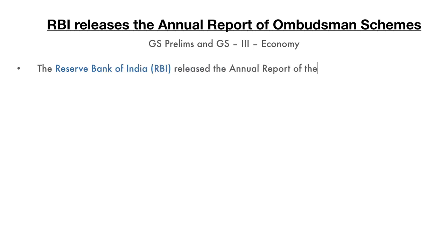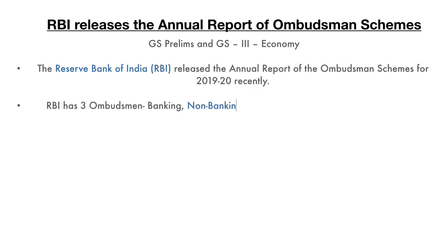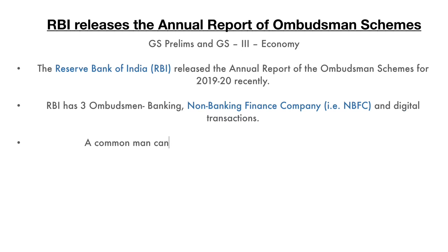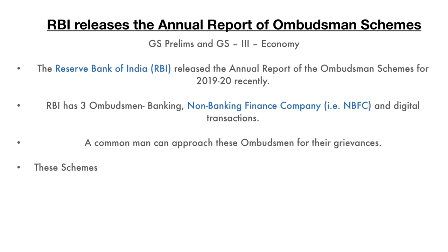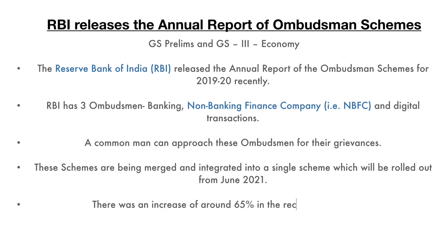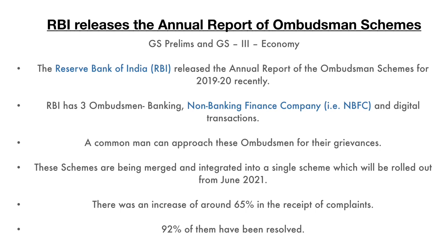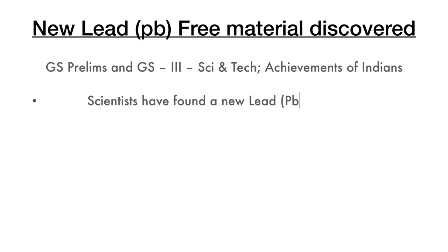The next headline: the Reserve Bank of India has released the annual report of the Ombudsman Scheme for 2019-20. There are three ombudsman schemes — banking, NBFC, and digital transactions. A common man can approach these ombudsmen for their grievances. These schemes are being merged and integrated into a single scheme, which will be rolled out from June 2021. There was an increase of around 65 percent in the receipt of complaints, and 92 percent have been solved.